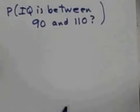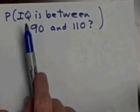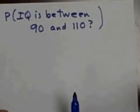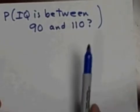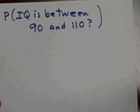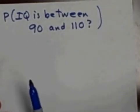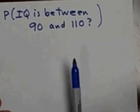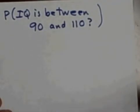I'd like to do one more IQ problem. What's the probability that we randomly pick an adult American and that person's IQ is between 90 and 110? Another way of stating the same question is what percent of all Americans have an IQ between 90 and 110?